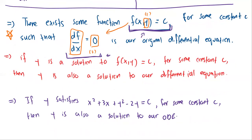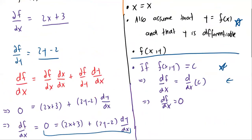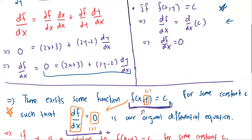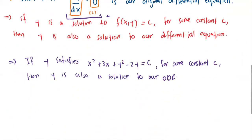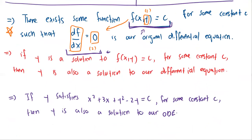How do we find that function? In this example I gave it to you, but finding it in general is something just a little bit more complicated — though not by much. We'll do that in the next video. A differential equation of this form — one that is the derivative of some function f(x,y) equal to a constant — is what we call an exact differential equation.